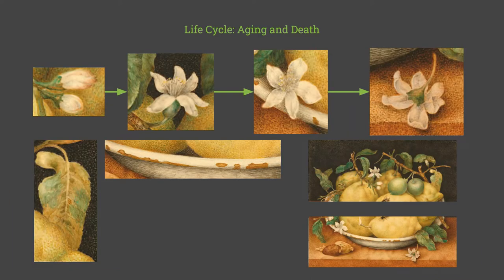You can also see the life cycle through the flowers. There are flower buds that haven't bloomed yet, then a flower that has slightly bloomed, followed by one that has completely bloomed, and finally a flower that has fallen onto the table and is on its way to wilting. You can also observe symbols of aging and death through the brownish colored leaves.